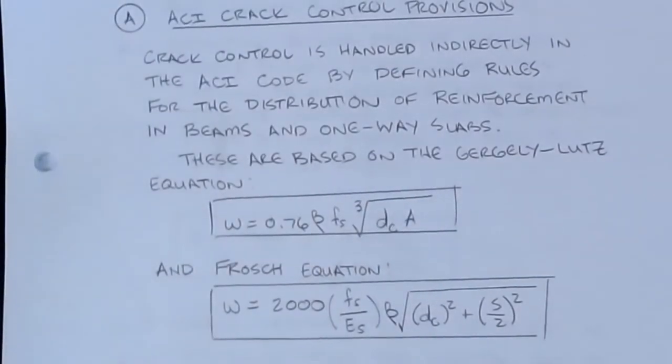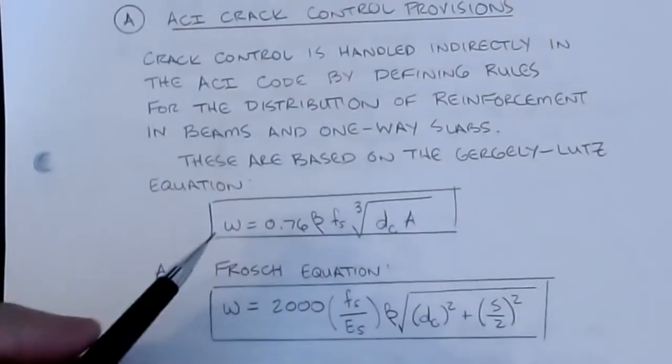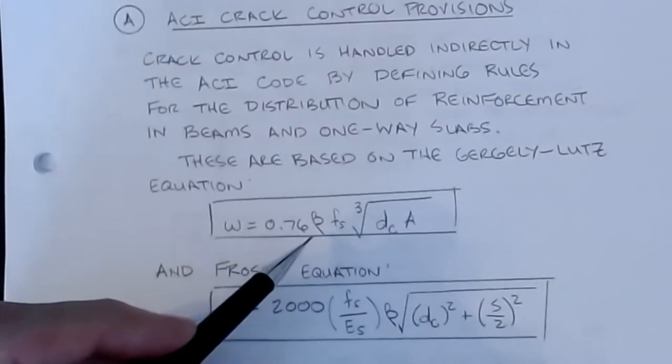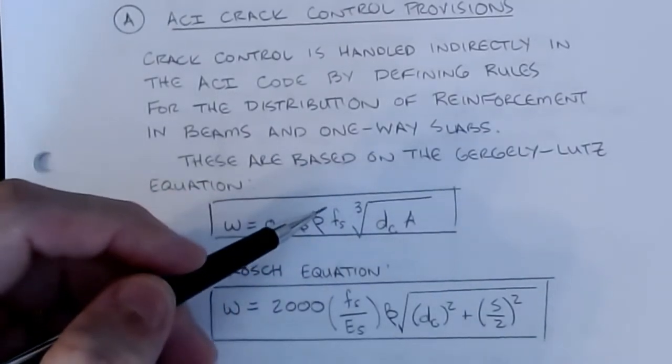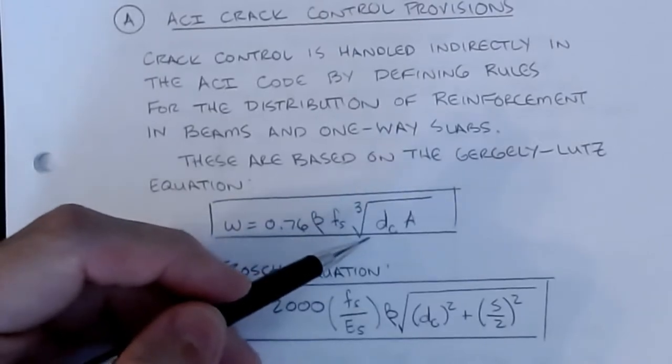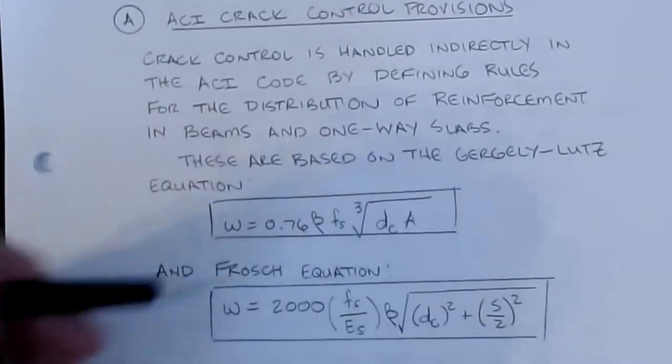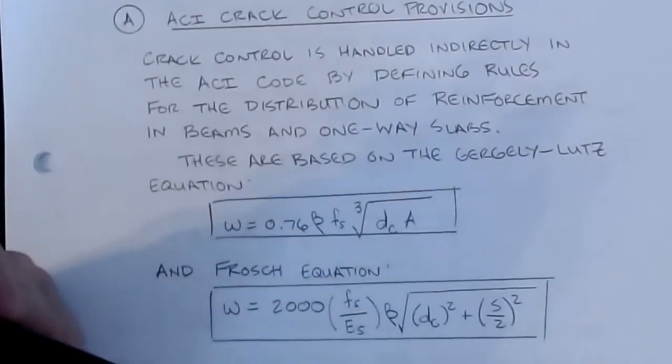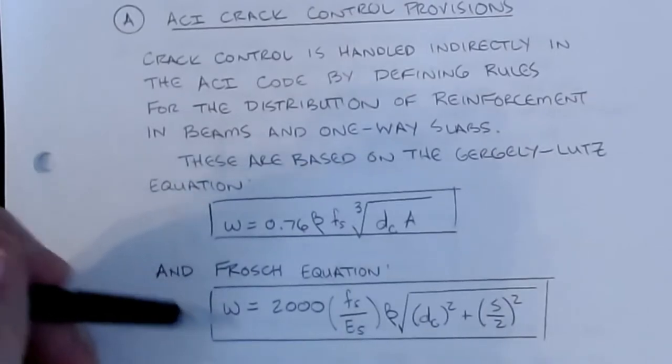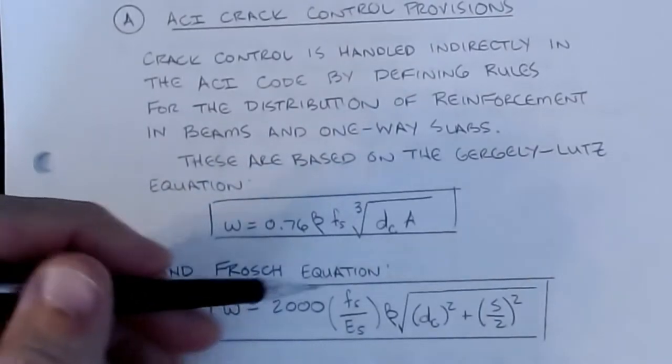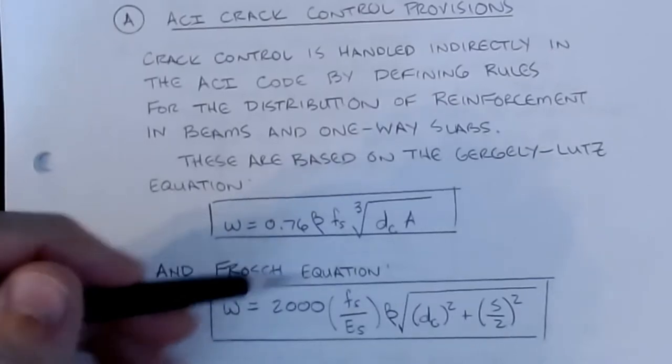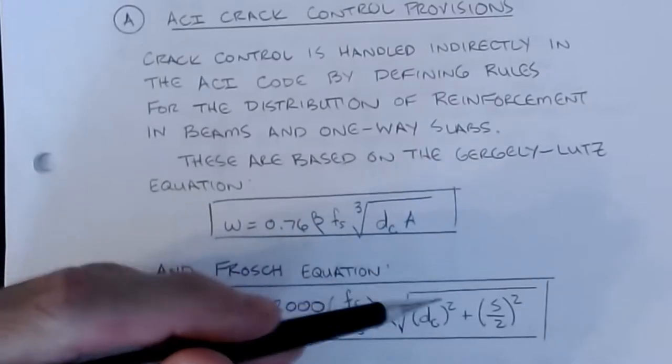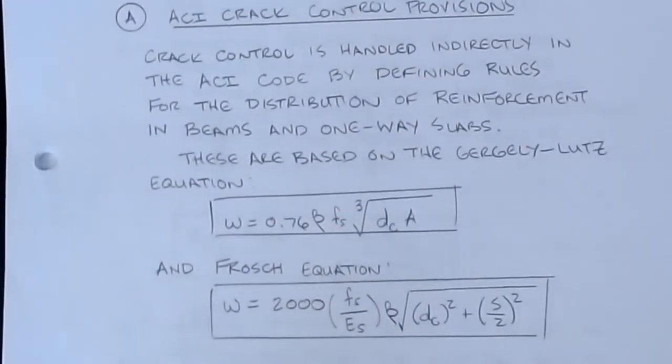There were two popular formulas that were typically used. The first one is known as the Gergely-Lutz equation, in which this parameter w was equal to 0.76 times beta times the stress in the steel, the average stress that is, times the cubed root of dc times a. And I'll show you a picture here in a second of what these parameters are, but by now you should have a pretty good idea as a guess to what they are. And then a different equation was presented by Frosch.